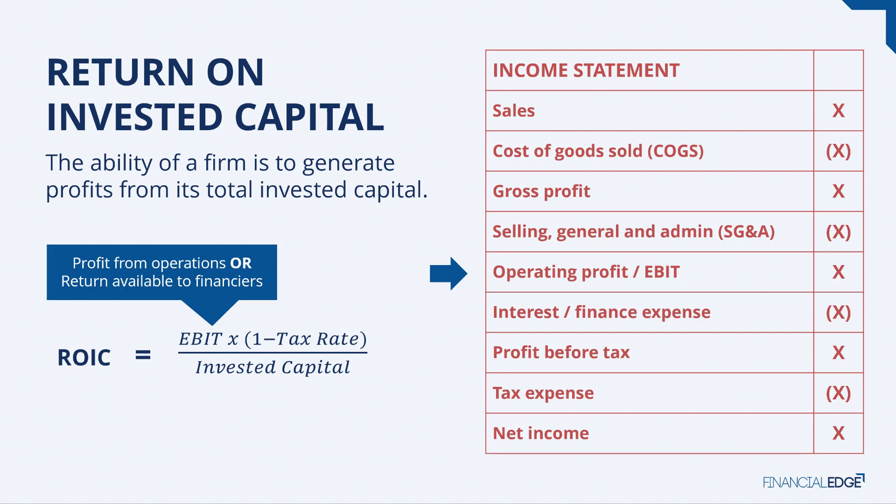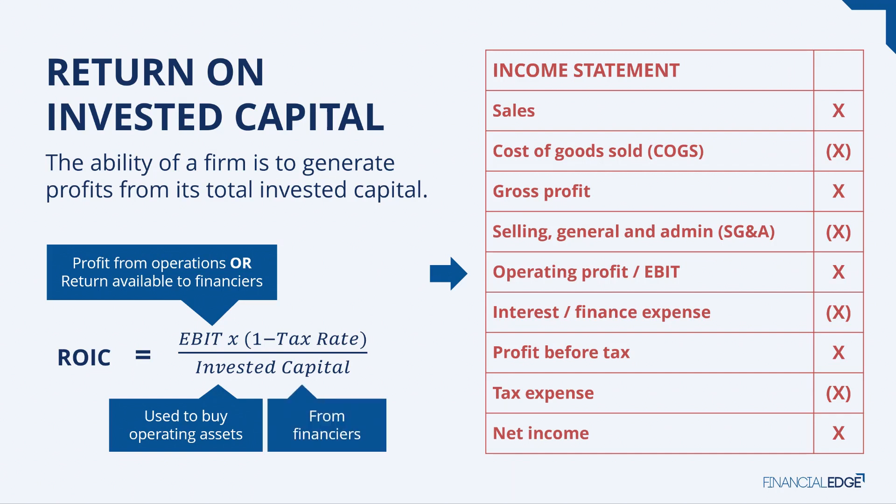Now, that invested capital — the denominator in the formula — is what's used to buy operating assets. Alternatively, you can think of it as the invested capital from financiers. Your financiers' invested capital could be your debt plus your equity, but it could also include other sources of finance, such as NCI, or non-controlling interests, or your preference shareholders. They've all invested capital, which is helping to generate EBIT.